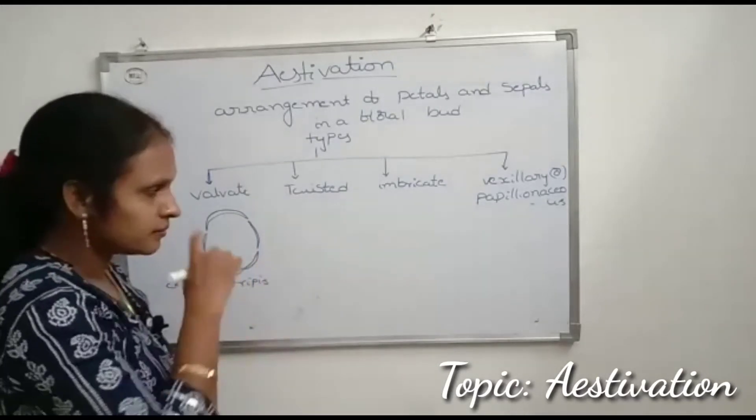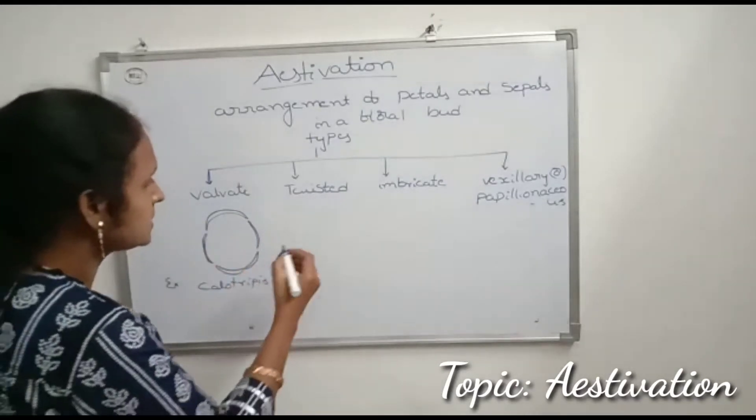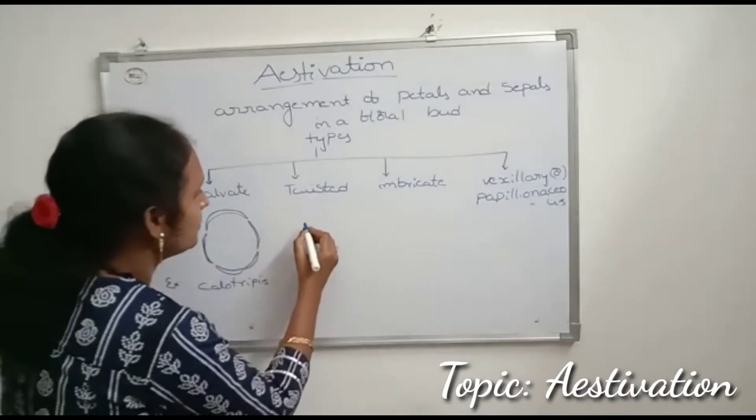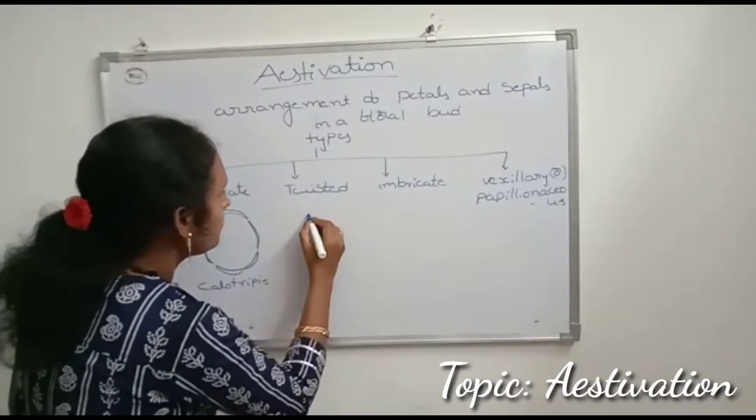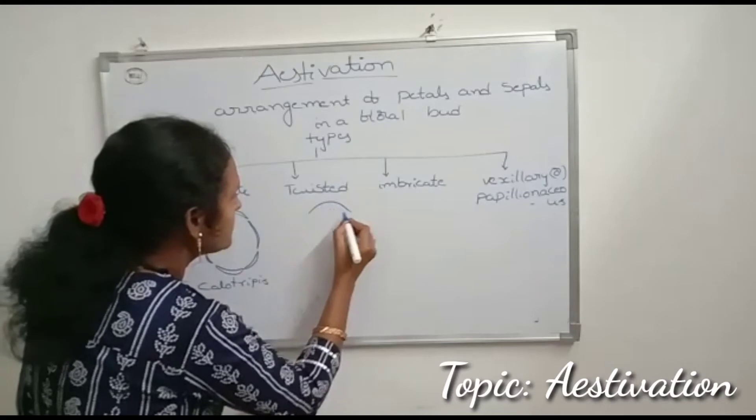Twisted estivation means the arrangement where one margin of the petals or sepals overlaps the next one.